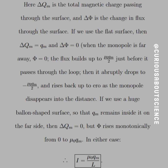Let's talk about this qualitatively. Delta-QM is the total magnetic charge passing through the surface, and phi is the change in flux through the surface. If we use a flat surface, then delta-QM equals QM and delta-phi equals 0. When the monopole is far away, phi equals 0; it builds up to mu-naught QM over 2 just before passing through the loop, drops abruptly to the negative of that, and rises back to 0. If we use a balloon-shaped surface so QM remains inside on the far side, the change in Q goes to 0 but flux rises monotonically from 0 to mu-naught QM. In either case, the current simply equals mu-naught QM over L.